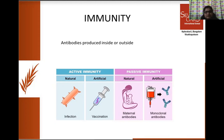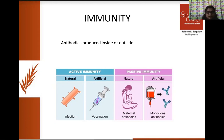In passive immunity, antibodies come from outside — naturally and artificially. Naturally, antibodies come from outside, for example maternal antibodies through the placenta and also through breastfeeding. Artificially is something we will be learning in detail now.